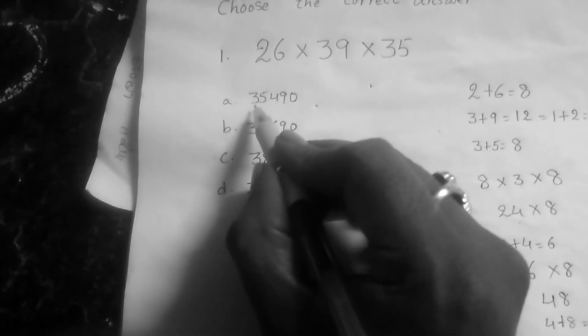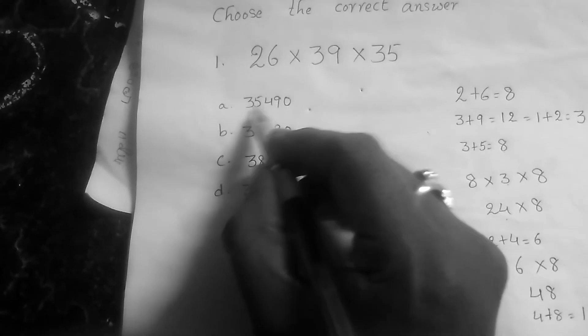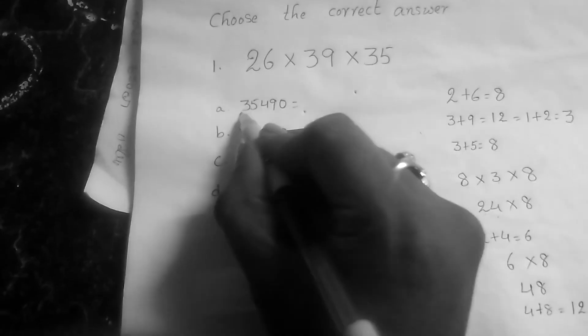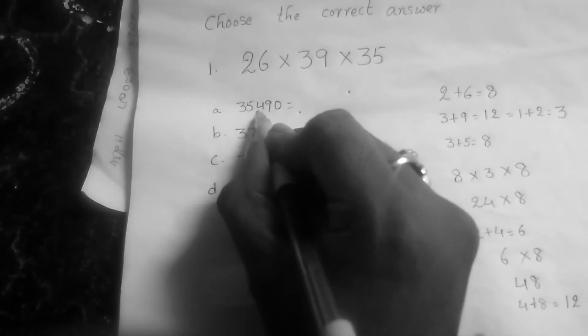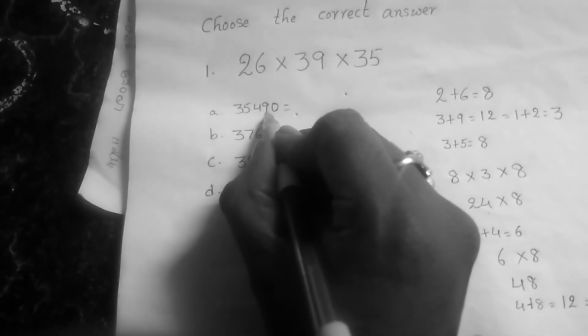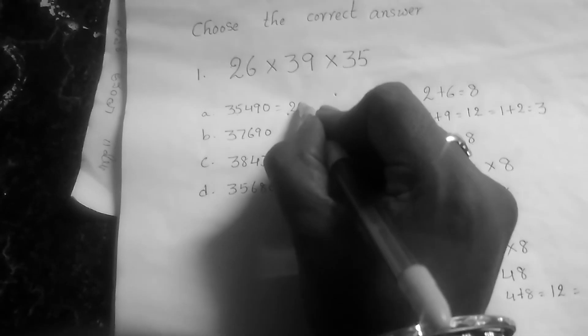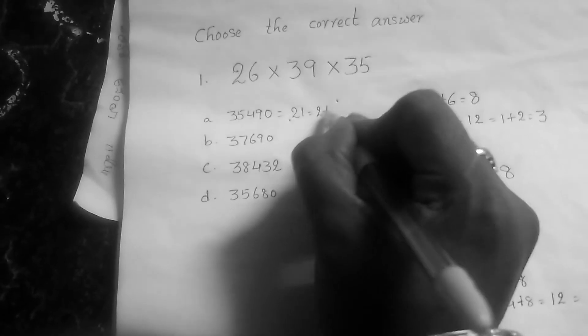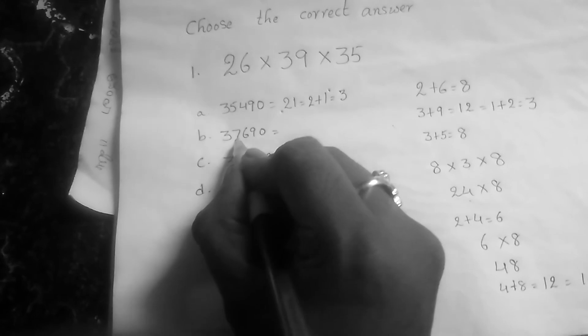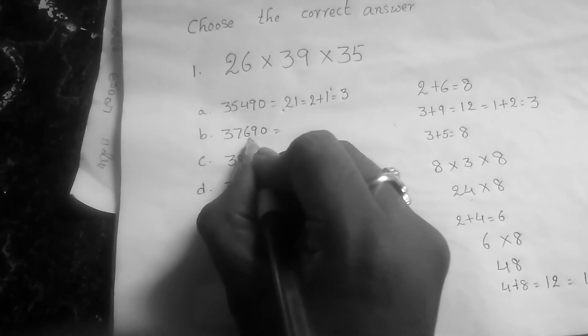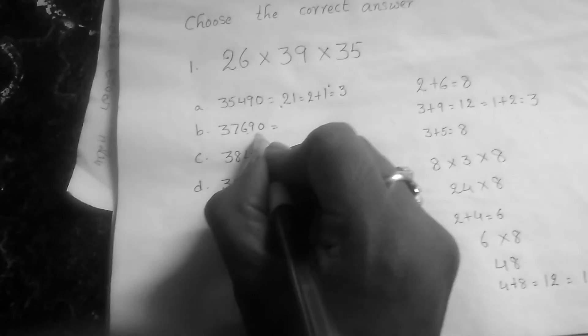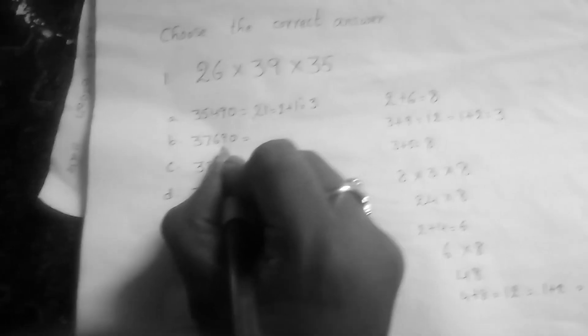Finally, you have to choose the options. Option A is 35,490. You have to add all these numbers: 3 plus 5 is 8, 8 plus 4 is 12, 12 plus 9 is 21, 21 plus 0 is 21, and 2 plus 1 equals 3. Option B: 3 plus 7 is 10, 10 plus 6 is 16, 16 plus 9 is 25, 25 plus 0 is 25, and 2 plus 5 equals 7.